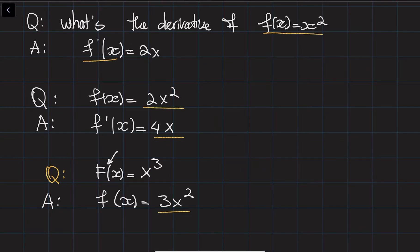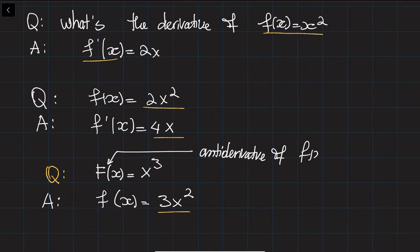We call this the antiderivative of f of x. So capital F of x is going to be called the antiderivative of f of x. If you are given the derivative of a function, you would like to figure out the original function such that if you take its derivative you get exactly that derivative back.